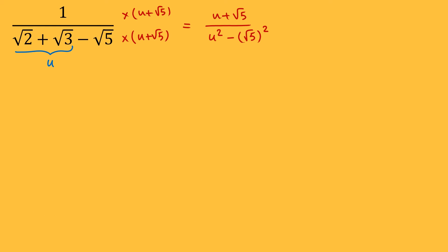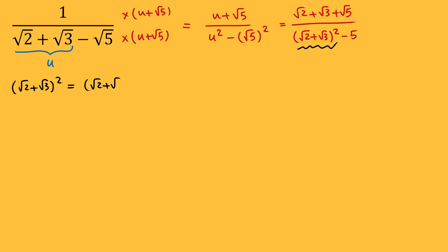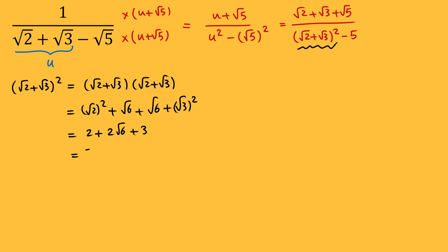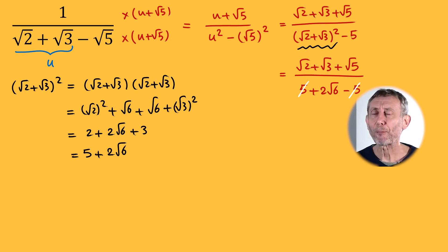Now we know that u is the square root of 2 plus square root of 3. So this equals (root 2 plus root 3 plus root 5) divided by (root 2 plus root 3) quantity squared minus 5. We can FOIL this out: (root 2 plus root 3) squared equals root 2 squared plus root 6 plus root 6 plus root 3 squared, which equals 2 plus 2 root 6 plus 3, which is 5 plus 2 root 6. So we have (root 2 plus root 3 plus root 5) divided by (5 plus 2 root 6 minus 5). And now 5 cancels out — that's great news, because we're left with 2 root 6 on the bottom.